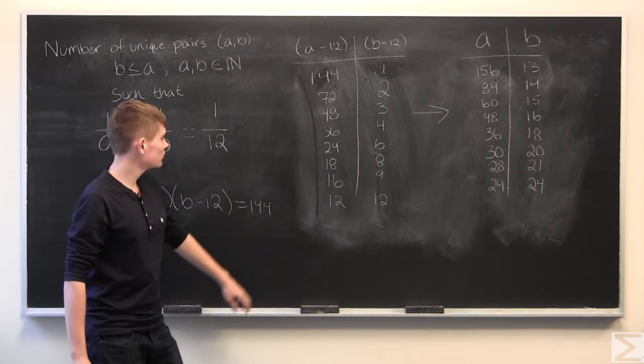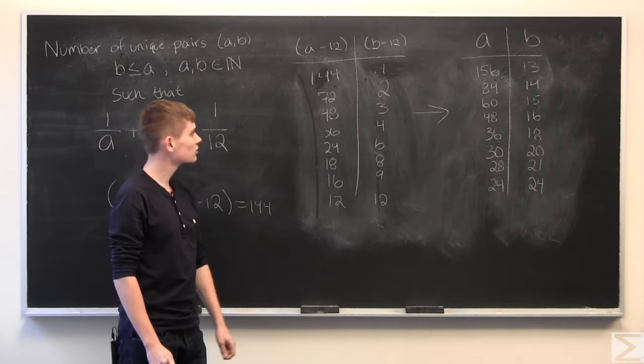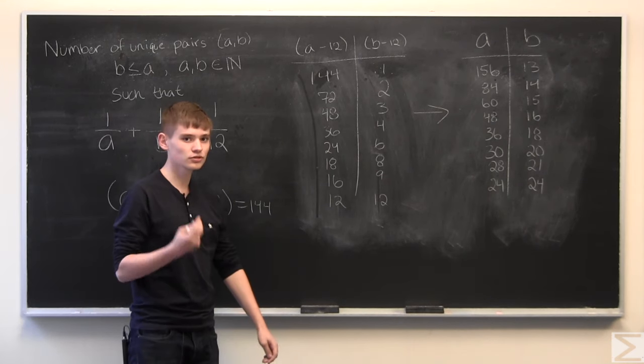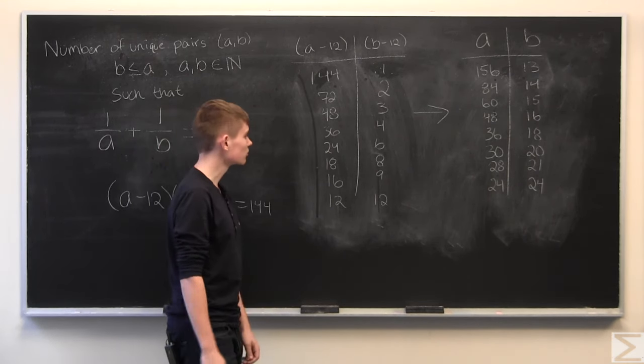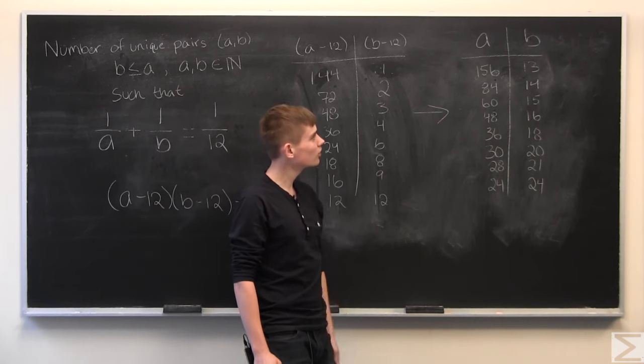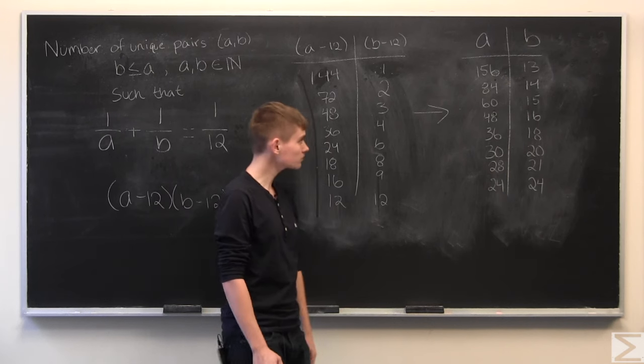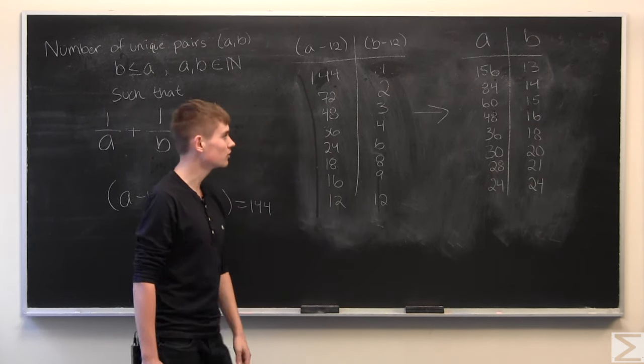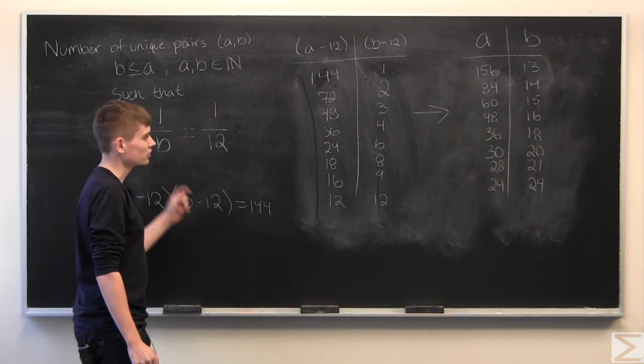And since these are the only ways that 144 can be factored into two different natural numbers, these are the only natural values of a and b such that this equality holds.